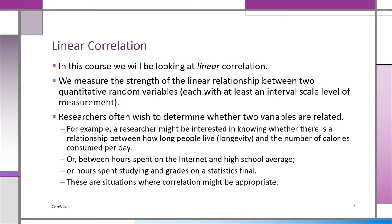Researchers are often trying to find out whether two variables are related. For example, you might be interested in looking at longevity — how long people live — and how many calories they consume per day. Or you might be interested in the amount of time spent on the internet and high school average or college GPA. There are lots of cases where you might be interested in looking at the correlation.